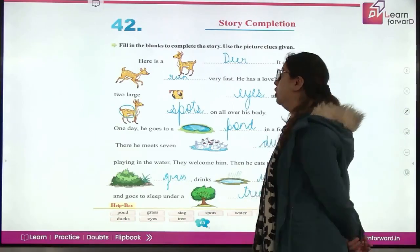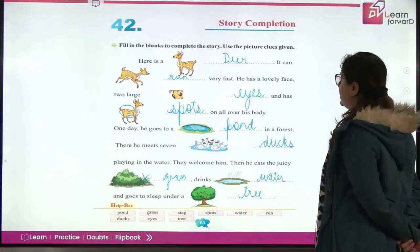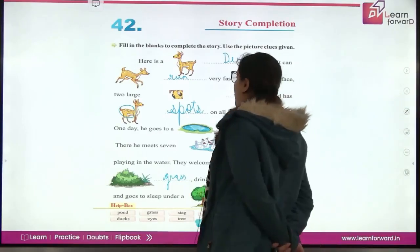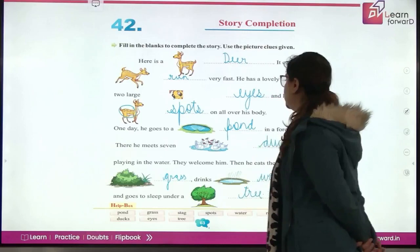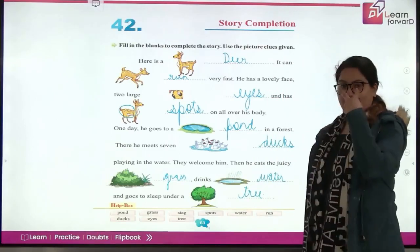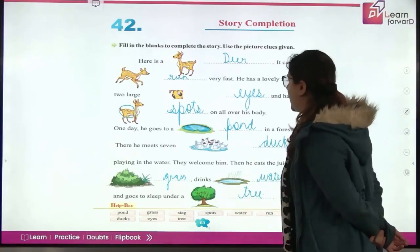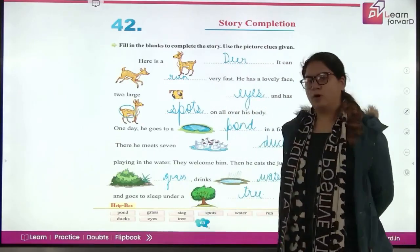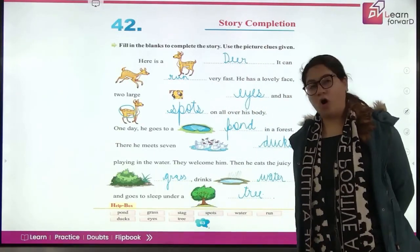He has a lovely face. It has a very lovely face. And two large eyes. And it has two large eyes. And has spots on all over his body. And what does it have all over its body? Spots, meaning dhubbe.